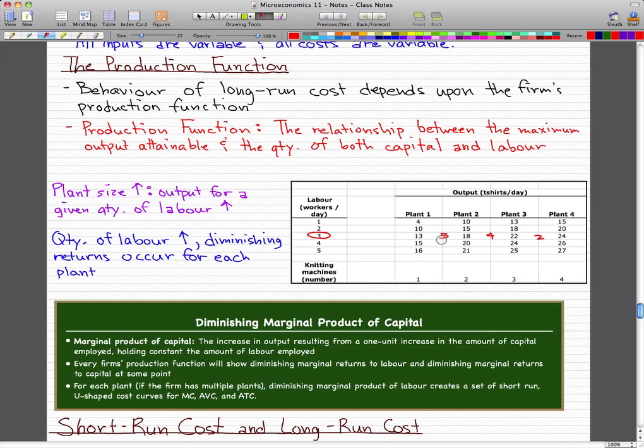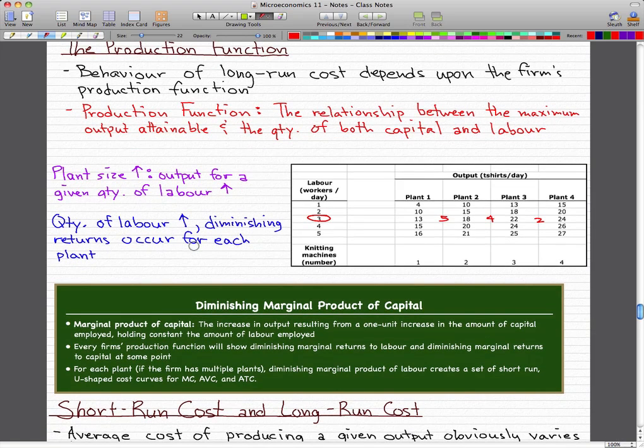So this is what we mean by diminishing returns. The more plants we add, the less change we actually get. So this is what we call the diminishing marginal product of capital.